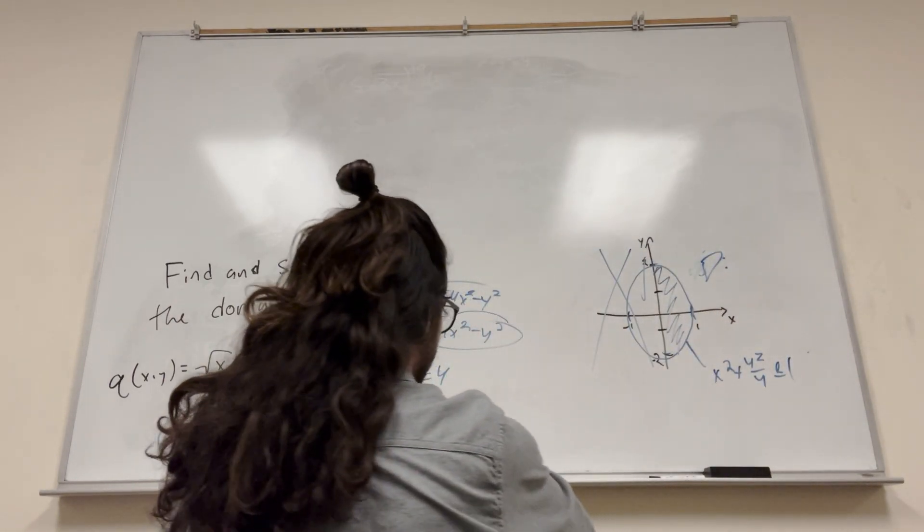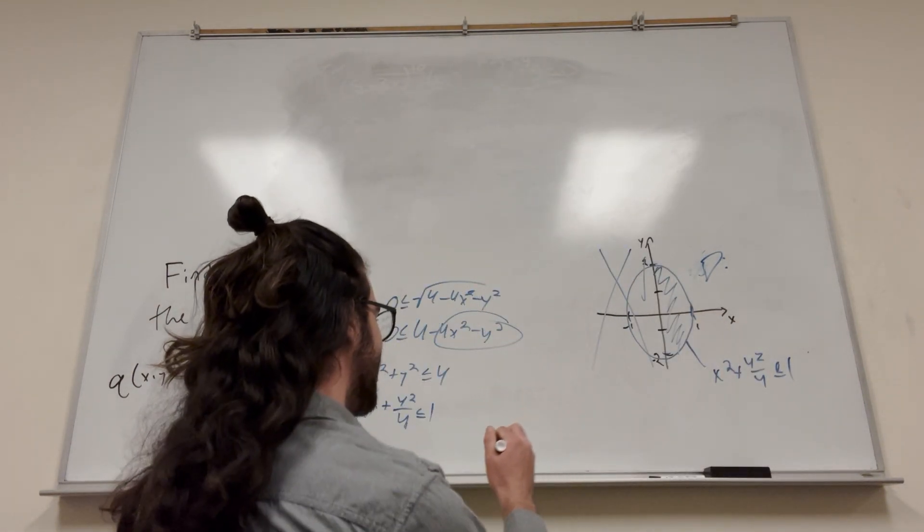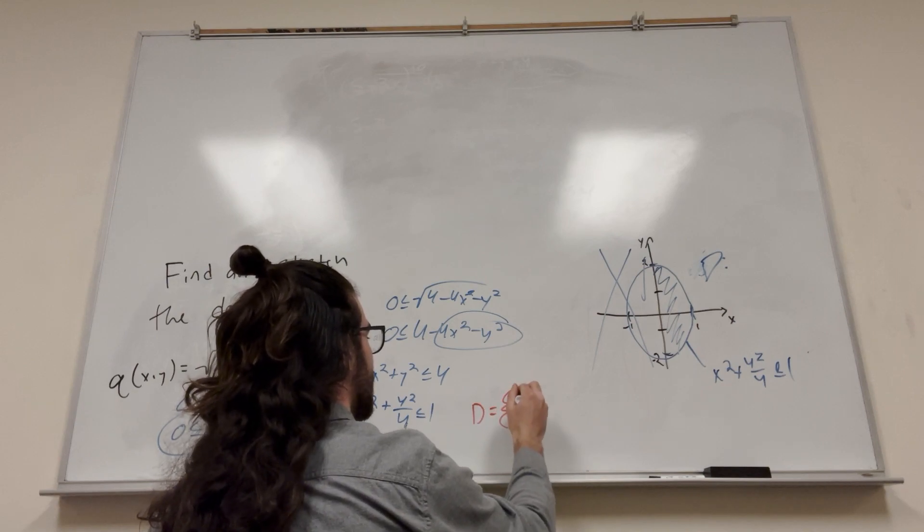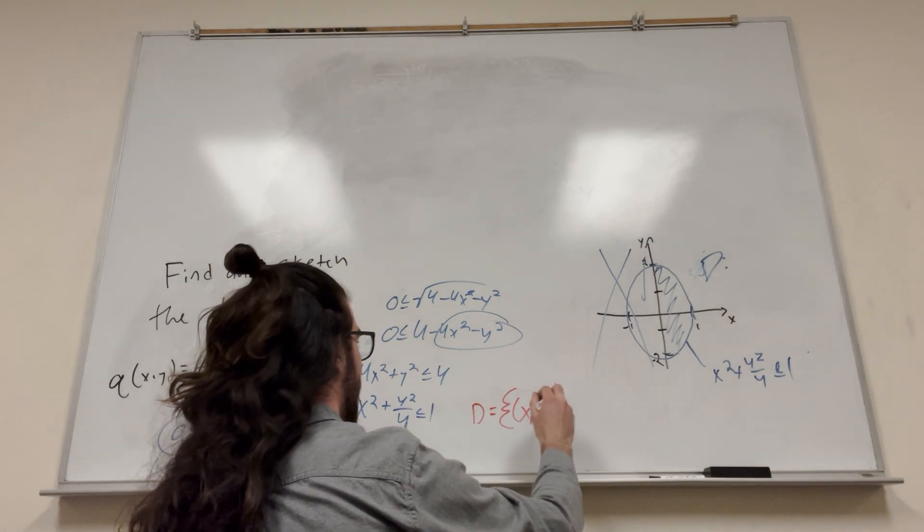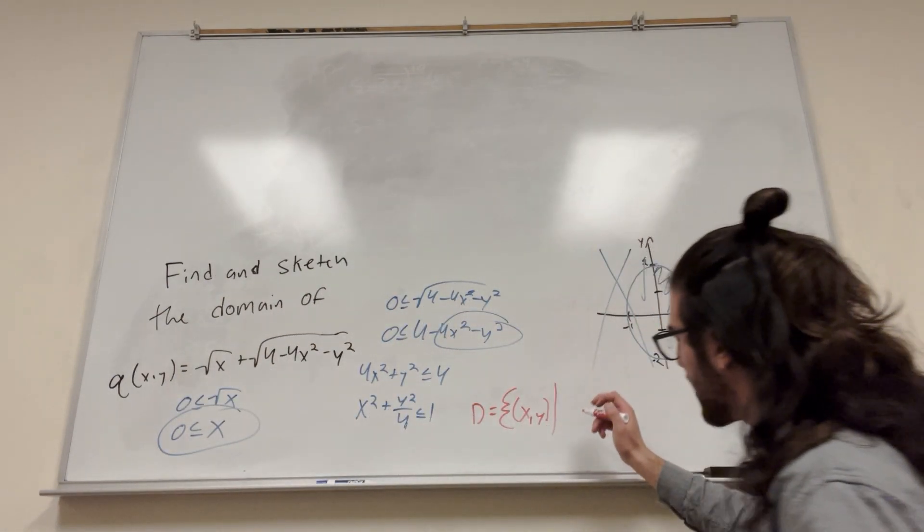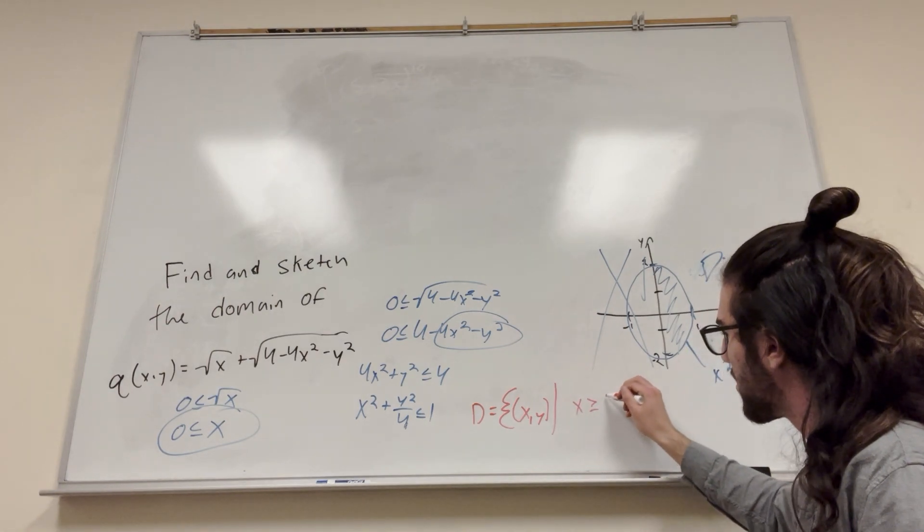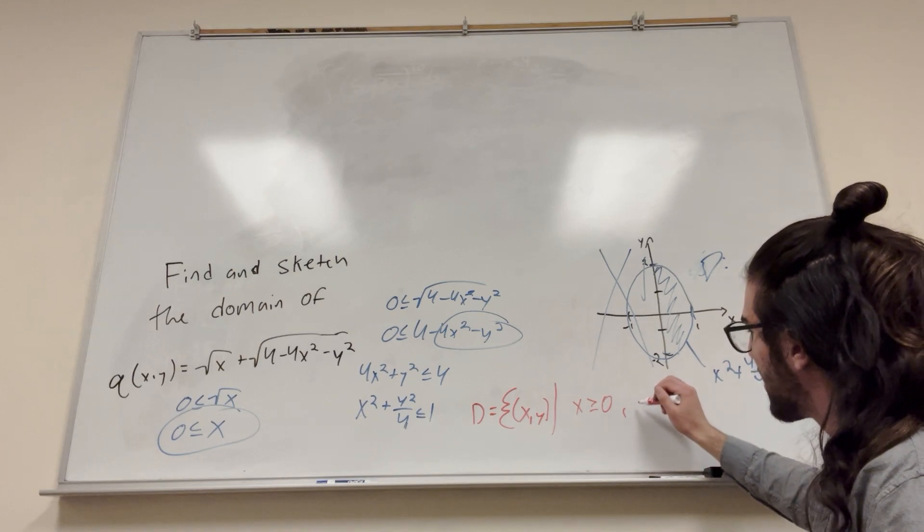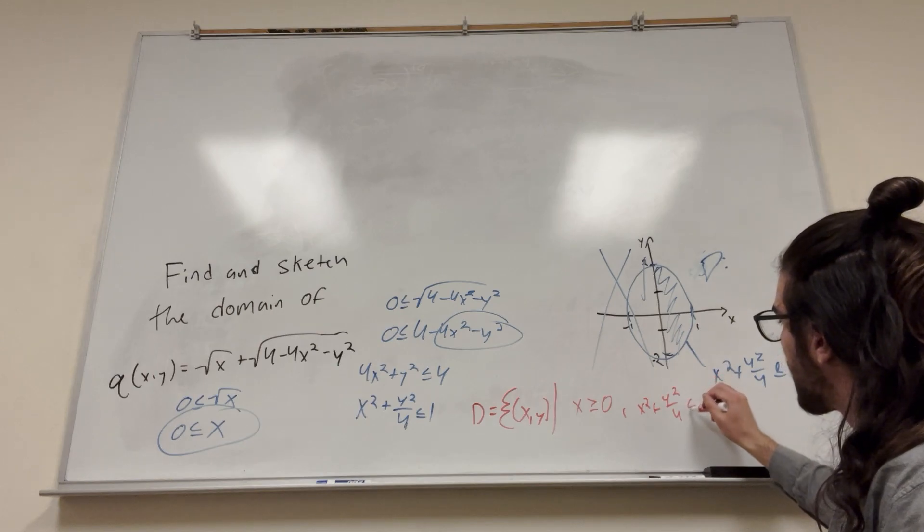So let's write the domain, right? It fell. Okay. All right, domain. So you want to use our little cool brackets and then put your function. So we have x in line and then a line. And then you just write what you got. So x is greater than or equal to 0. And then we have that, let's see, x squared plus y squared over 4 is less than or equal to 1.